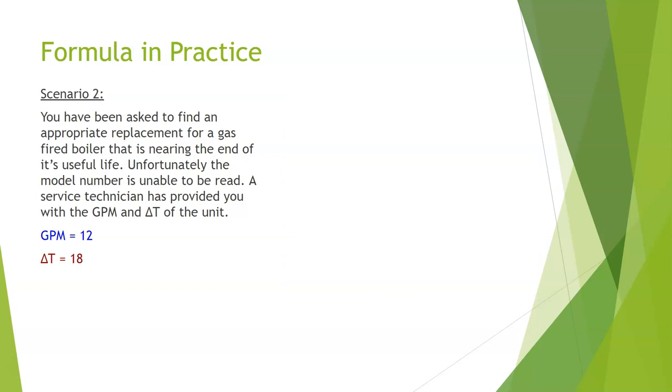Let's take a look at scenario two. You've been asked to find an appropriate replacement for a gas-fired boiler nearing the end of its useful life. Unfortunately the model number is unable to be read. A service technician has provided you with the GPM and delta T. Our GPM equals 12 and delta T equals 18. Pause the video, work to the solution, and when you have an answer, play the video and we'll work through it together.